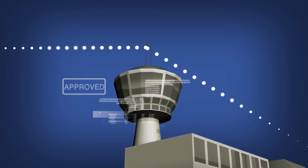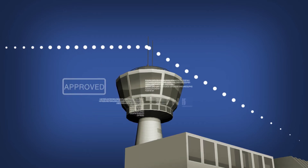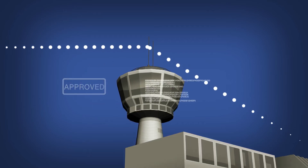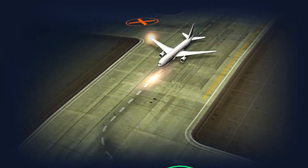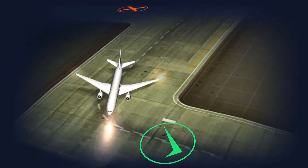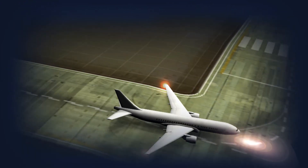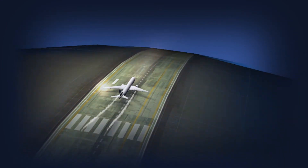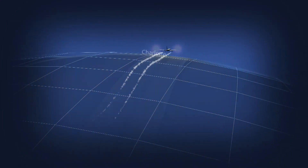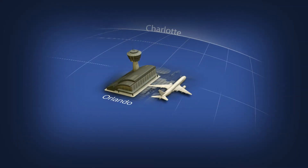Once again, the surface flight data object updates FAA and airline systems, and the new clearance is linked to the cockpit. As Flight 1 taxis, it is automatically monitored to make sure it is on the right route to the correct runway. After the Daytona Beach flight departs, the weather in Orlando clears and Flight 2 takes off.